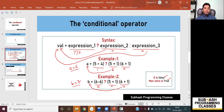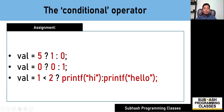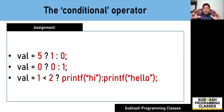I've given you an assignment — I want you to solve it before going further in this lesson. The three expressions are: val is equal to five question mark one colon zero; val is equal to zero question mark zero colon one; val is equal to one less than two question mark printf hi colon printf hello. Guess the answers for all three, post your answers in the comment section below, and then try them out practically on your computer.